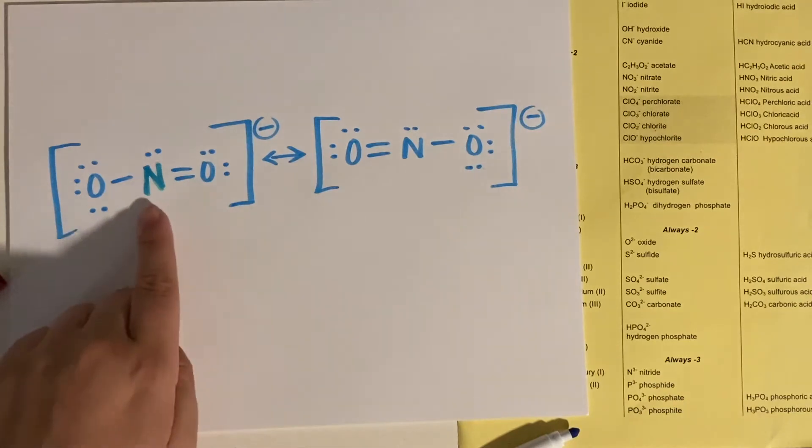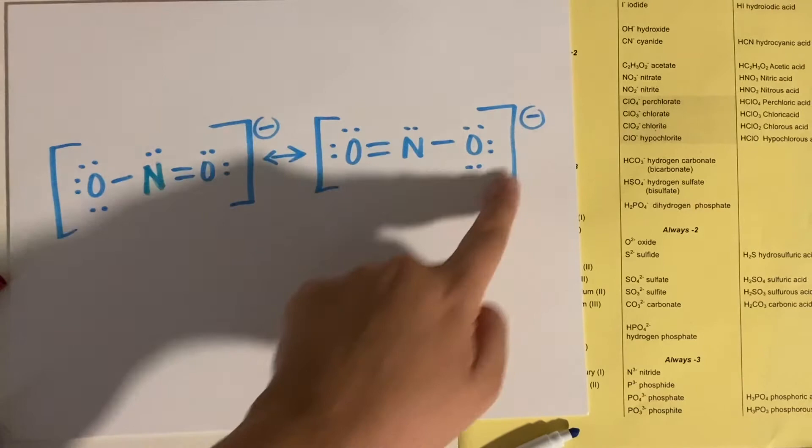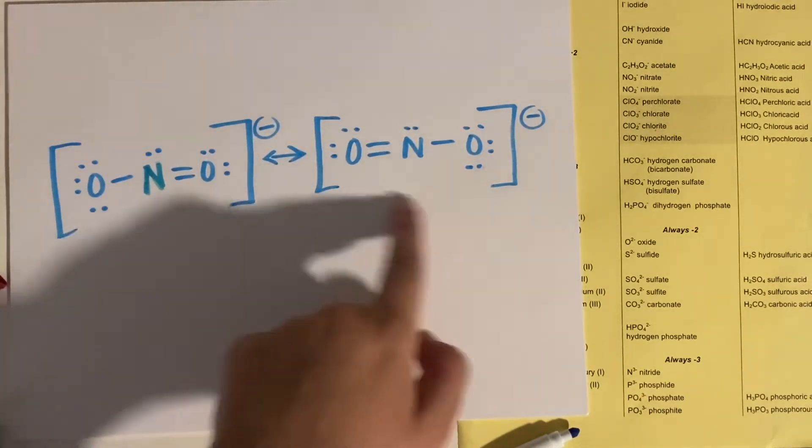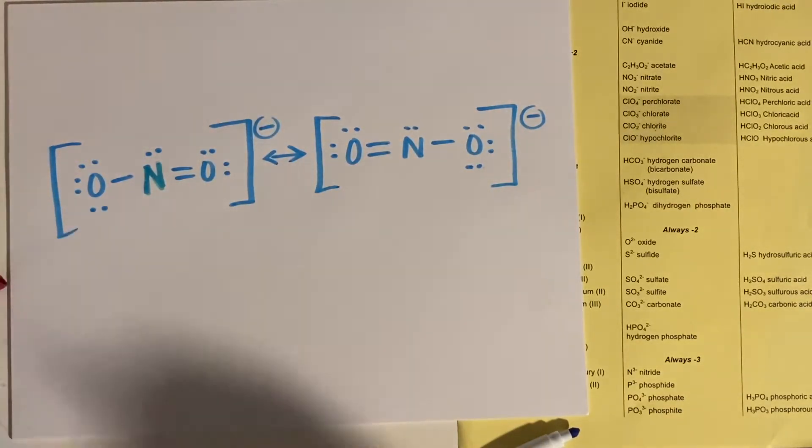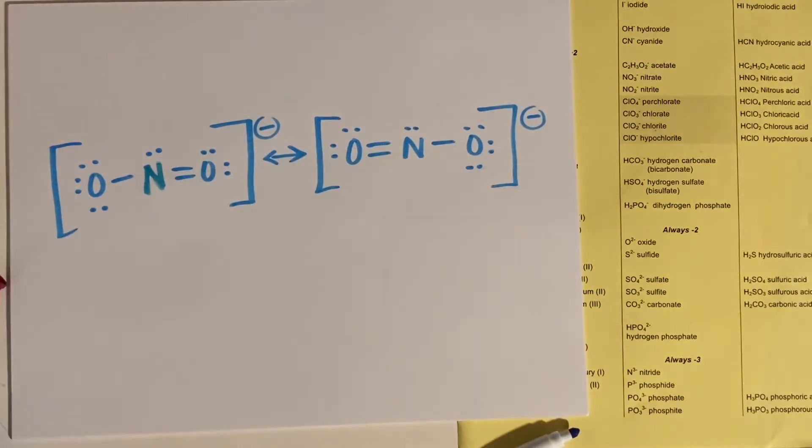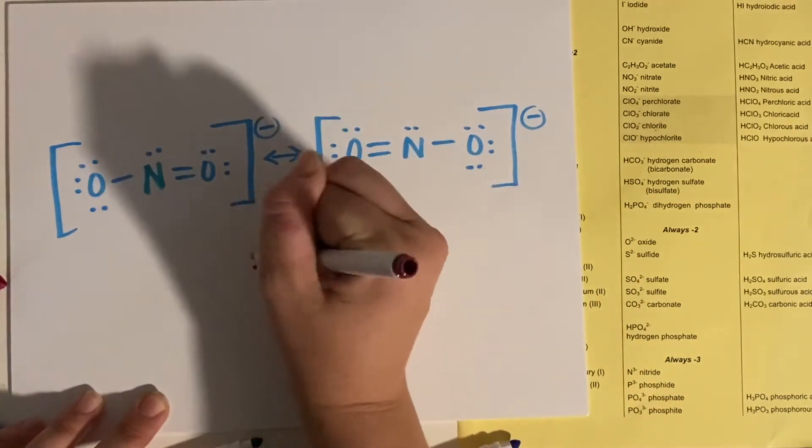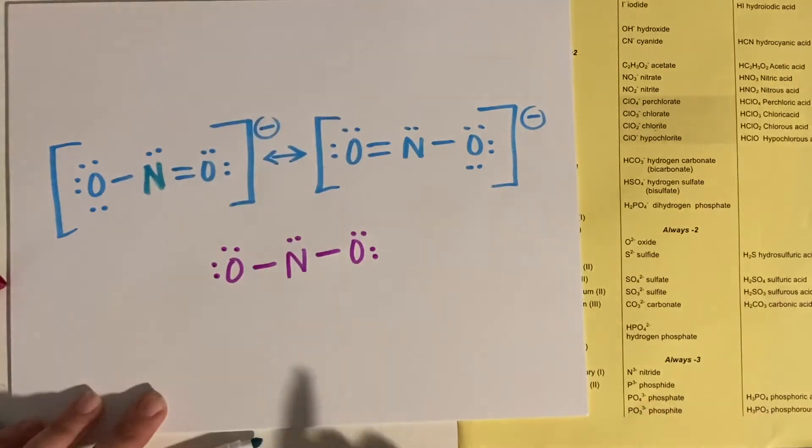And then outside of the brackets, you'd put your negative. And if you put your negative like next to the actual oxygen that is retaining the negative charge, that's fine if that helps you visualize it. We would consider this to have a resonance structure. There's kind of, it's never going to be fully stable like this one on the left, and it's never fully stable like this one on the right.